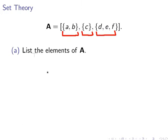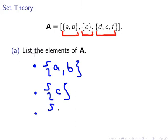Writing them all out, the first element here is A and B, or that subset there. The next one is the set that just comprises of C. And lastly, D, E, and F. So, those are the elements of the set A.